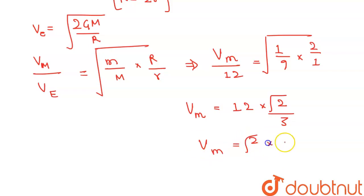root 2 times 4, or after calculating this we will get exactly 5.65 kilometer per second. So this will be our final answer.